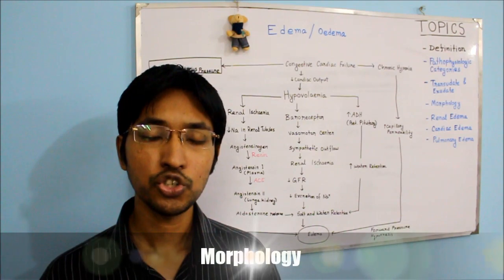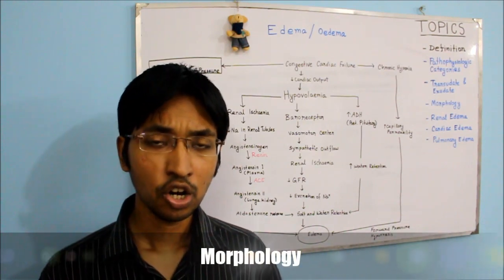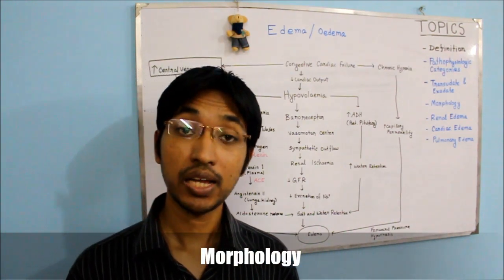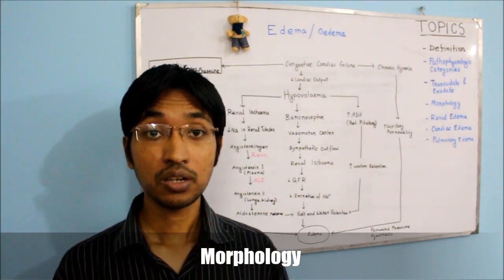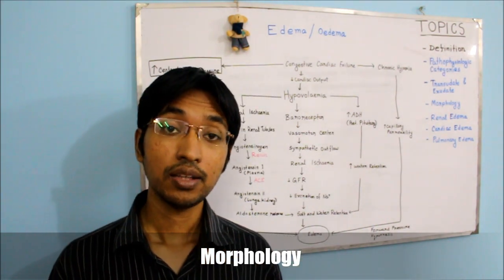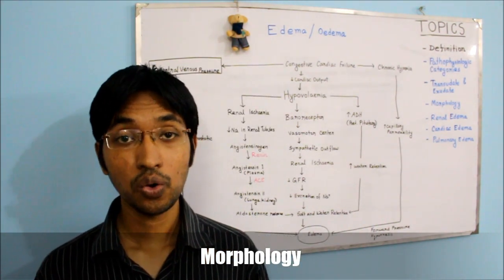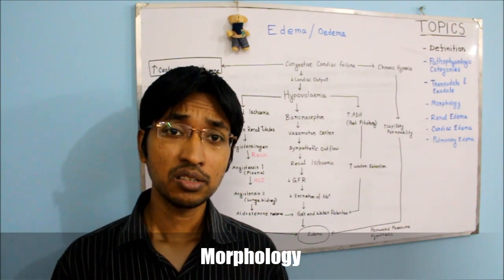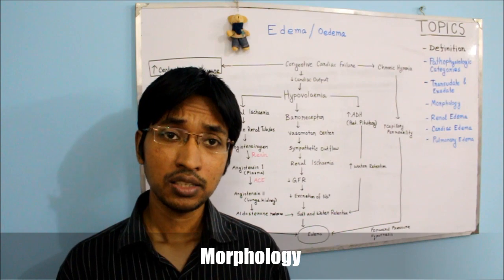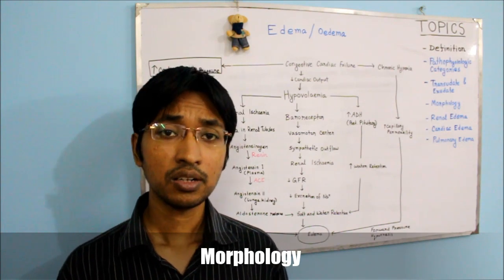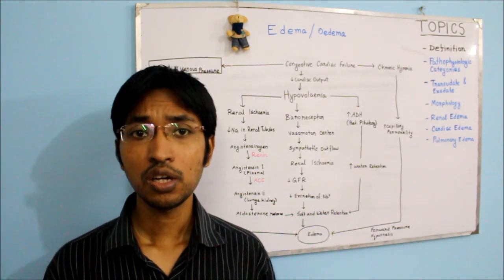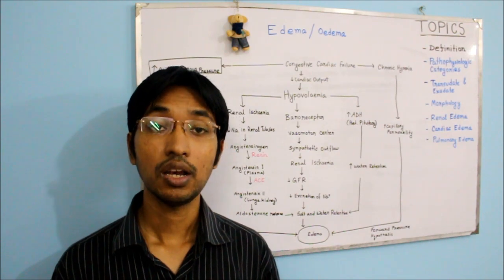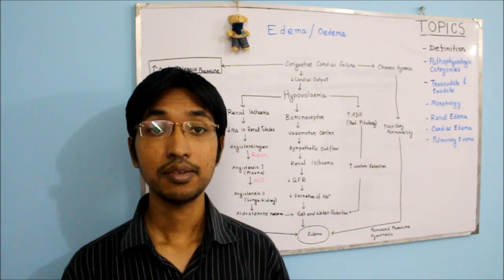Regarding the morphology of edema, under the microscope edema can be identified by clearing and separation of the extracellular matrix and subtle cellular swelling. Edema can happen in any tissue, but it commonly occurs in subcutaneous tissue, lungs, and the brain.